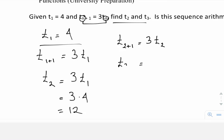I'm going to have 2 plus 1, which is equal to 3 times t of 2. And so t3 is equal to 3 times t of 2, we said is 12, which gives us 36.